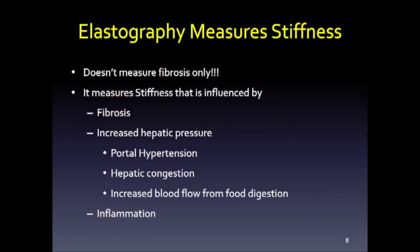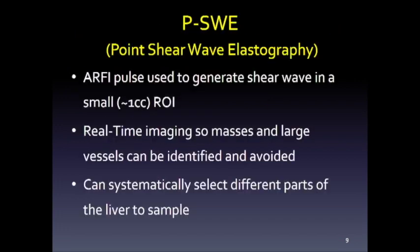One key thing to remember is that elastography measures stiffness, not fibrosis. Stiffness is influenced not only by fibrosis but also by increased hepatic pressures. Anyone with portal hypertension, hepatic congestion, increased blood flow from food digestion, or even inflammation will affect the values, potentially leading to overestimation of the degree of fibrosis.